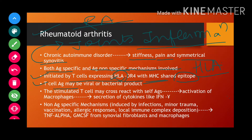The stimulated T-cells then cross-react with self-antigens. This viral or bacterial product sensitizes the T-cell, and after that, those T-cells cross-react with self-antigens. This leads to activation of macrophages, and subsequently we see secretion of cytokines like interferon gamma. Interferon gamma is further responsible for the differentiation of TH1 cells, as we have studied before, and TH1 cells further release more cytokines.